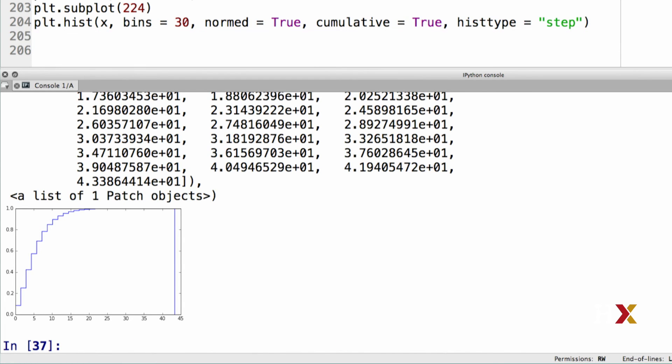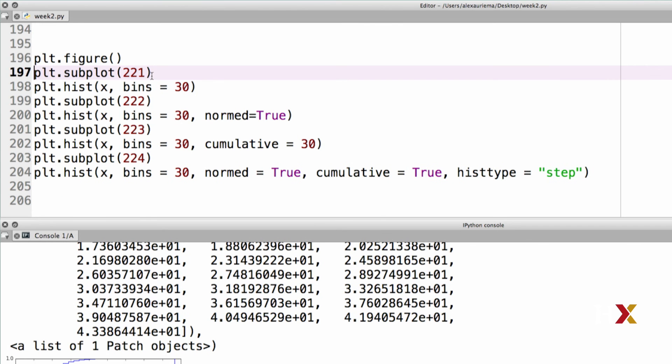We can now pull all of these four different histograms into one figure. I will first create a figure by saying plt figure, and I then insert each of these histograms into its own subplot.